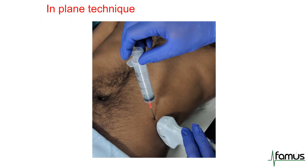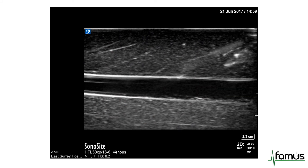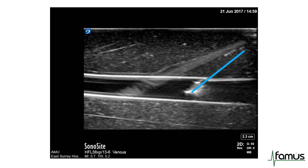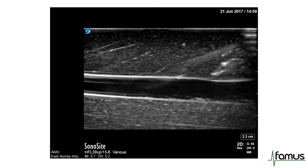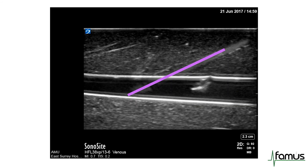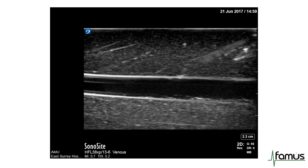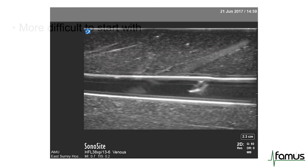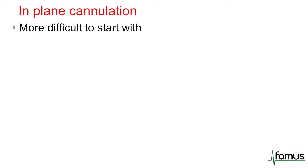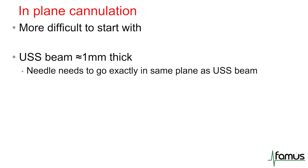The in-plane technique is harder to master, but does allow finer control of the needle and so can be used when there's a very small area for access. This is an example of an aseptic procedure being undertaken with the in-plane technique. The vessel will look smooth and flat and run across the screen, and you can see the whole shaft of the needle as it enters the vessel. In-plane cannulation is generally more difficult to start with, primarily because the needle has to run in exactly the right plane the whole way along its length to be visualized within the ultrasound beam.